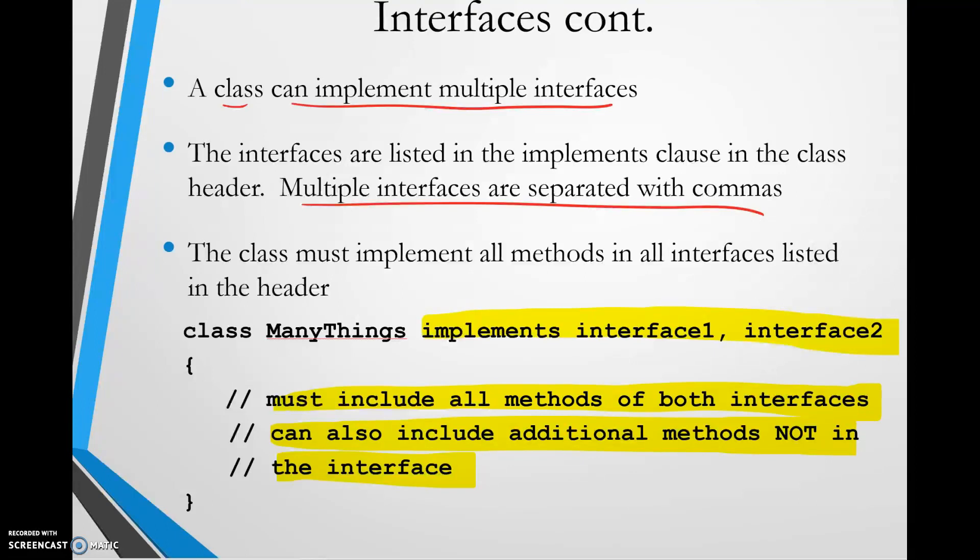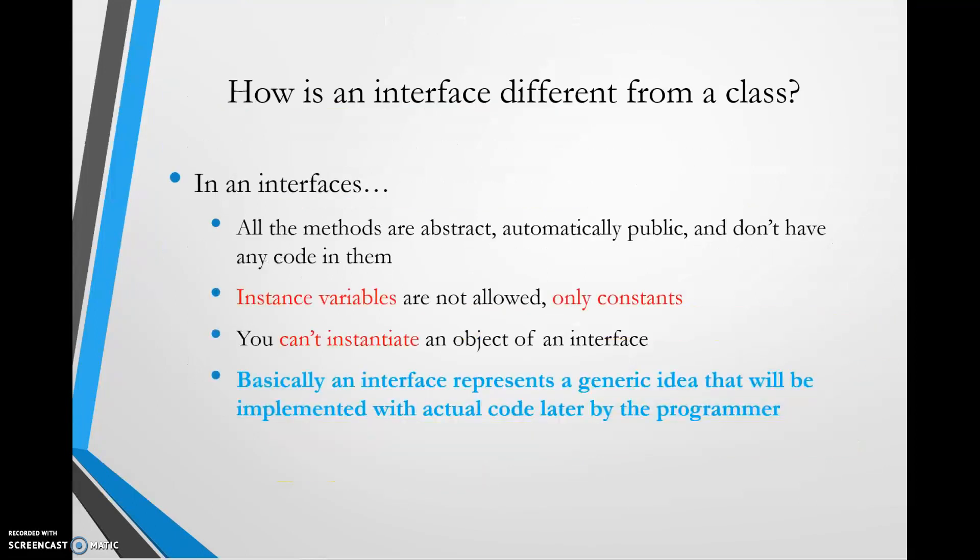So again, we can create a regular class just like we've been doing, and then we can enhance the class by adding the methods of this interface. So you might be wondering, well, how is an interface different from a class? There are a couple of key traits that make them different. So first of all, in an interface all the methods are abstract, automatically public, and don't have any code in them. The next thing that's important to recognize is that instance variables are not allowed. You can only have constants. And lastly, you cannot instantiate an object of an interface. Since we can't instantiate an object, that's why we can't have instance variables. So basically we could think of this that an interface is a generic idea that will be implemented with actual code later by the programmer.